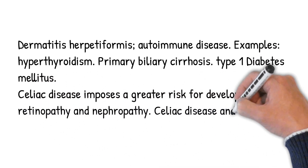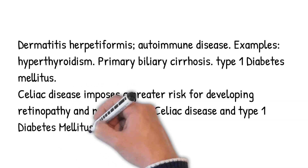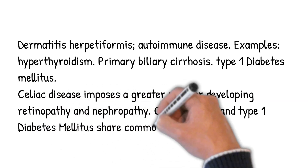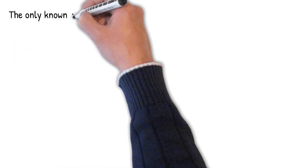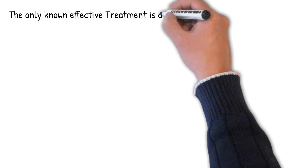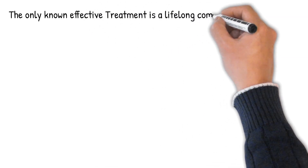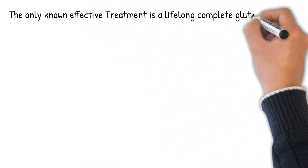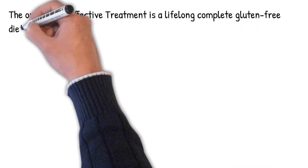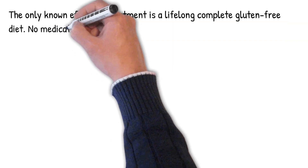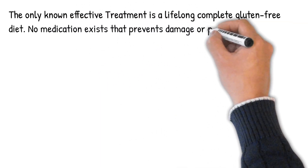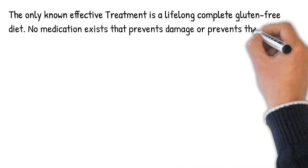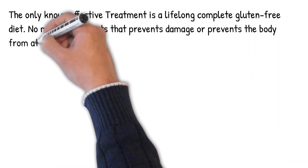Celiac disease and type 1 diabetes mellitus share common alleles. The only known effective treatment is a lifelong complete gluten-free diet, which leads to recovery of the intestinal mucosa, improves symptoms, and reduces the risk of developing complications in most people.